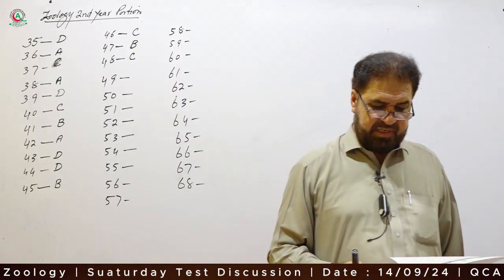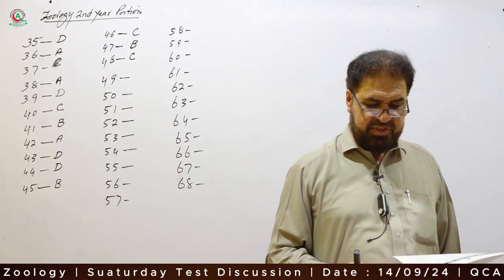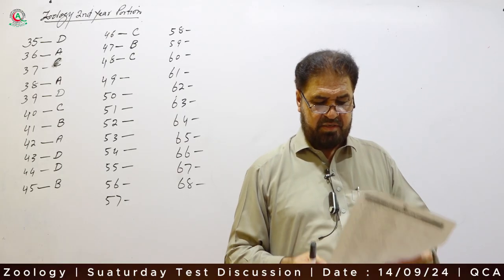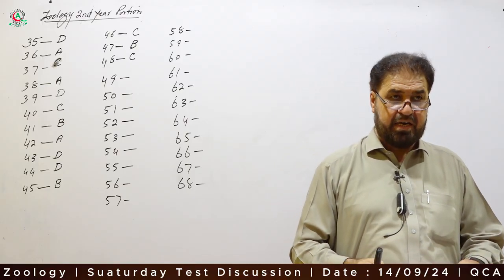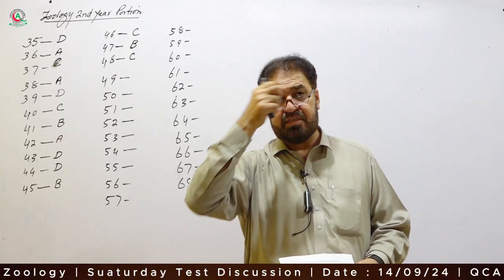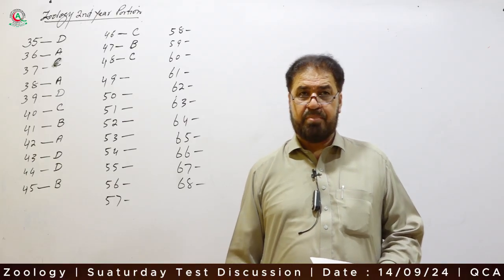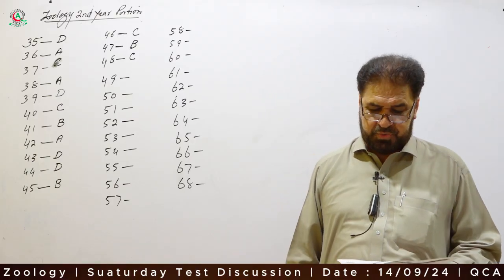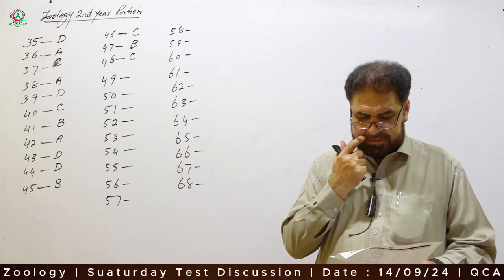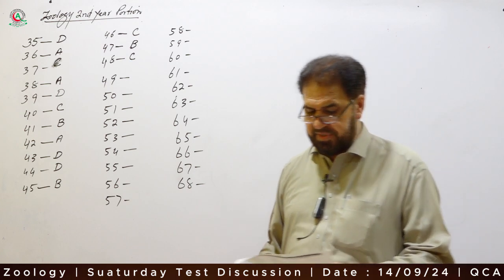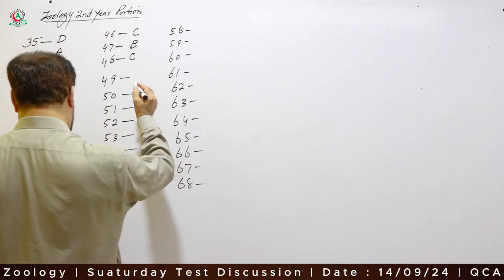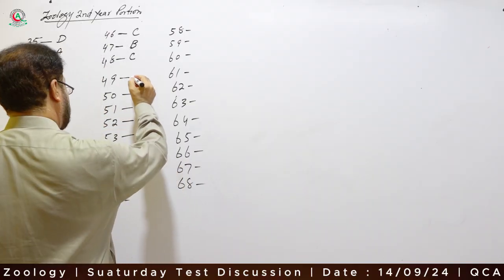Question 49: A stimulus which can initiate a nerve impulse is called a threshold stimulus or adequate stimulus. An adequate stimulus is a stimulus which is capable of exciting the tissue. The correct answer is both A and B — Option D.